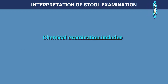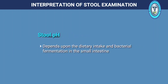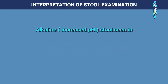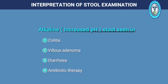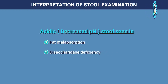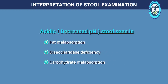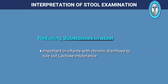Chemical examination of stool includes stool pH and reducing substances. Stool pH depends upon the dietary intake and bacterial fermentation in the small intestine. Alkaline stools can be seen in cases of colitis, villous adenoma, diarrhea and antibiotic therapy. Acidic stools may be seen in cases of fat malabsorption, disaccharide deficiency and carbohydrate malabsorption. Reducing substances in stool are important in infants with chronic diarrhea to rule out lactose intolerance.